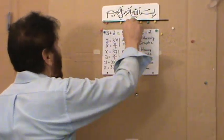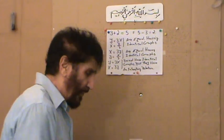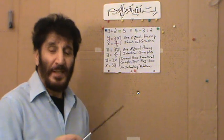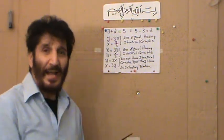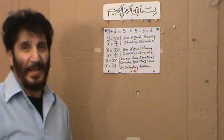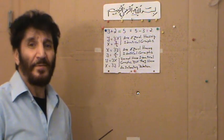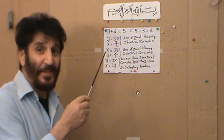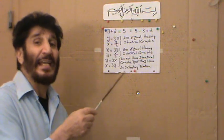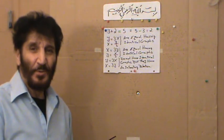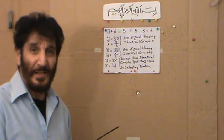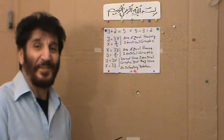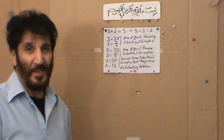With respect to equality, which is an equivalence relation, 3 plus 2 equals 5 and 5 minus 3 equals 2 are equivalent — they are paraphrases of one another. With respect to the operations of addition and subtraction, they are inverse of one another. So on one hand they are equivalent, and on the other hand they are, in a sense, inverse: one of them undoes the action of the other.